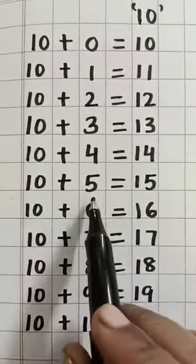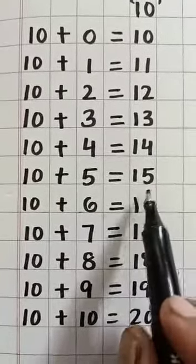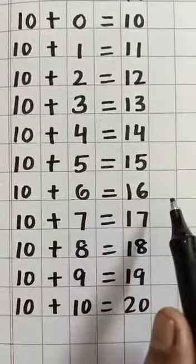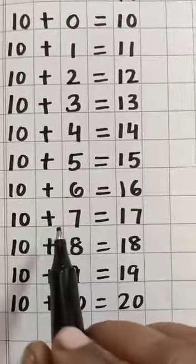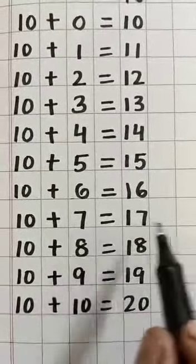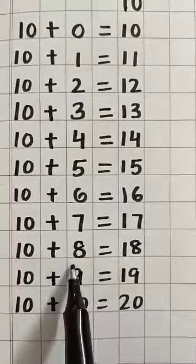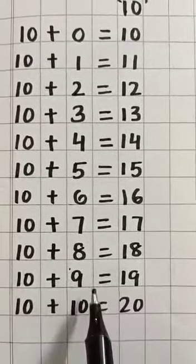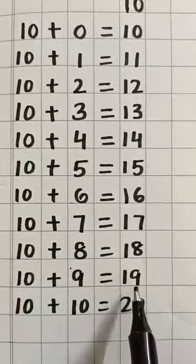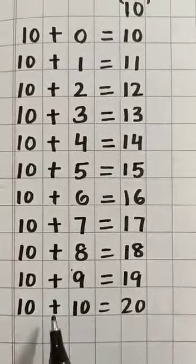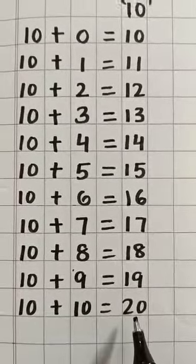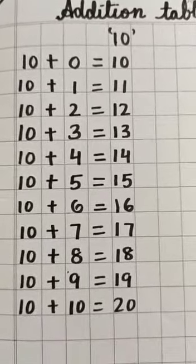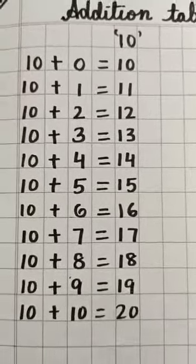10 plus 10 equals to 20. 10 plus 6 equal to 16, 10 plus 7 equal to 17, 10 plus 8 equal to 18, 10 plus 9 equal to 19, 10 plus 10 equal to 20. Okay, you will write in your math copy two times. Bye.